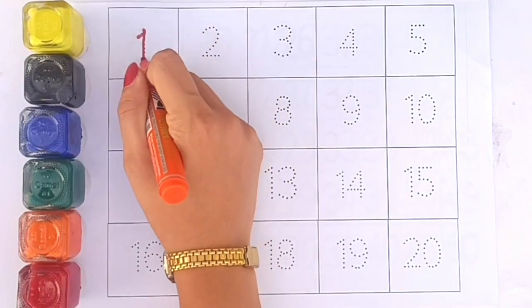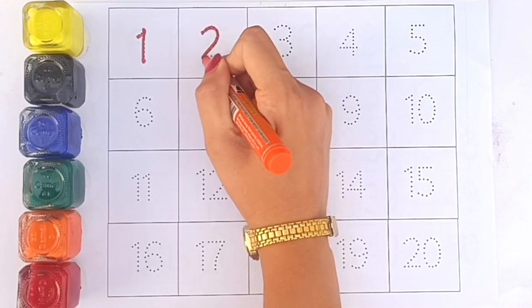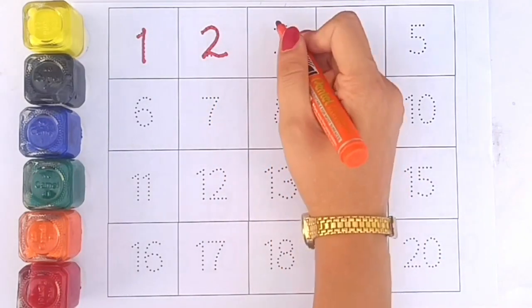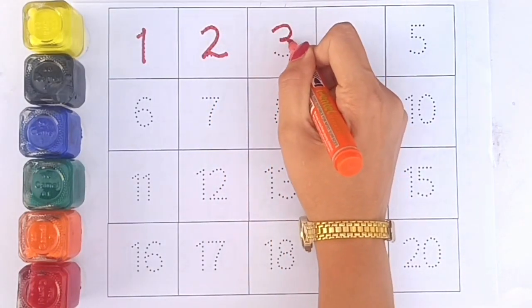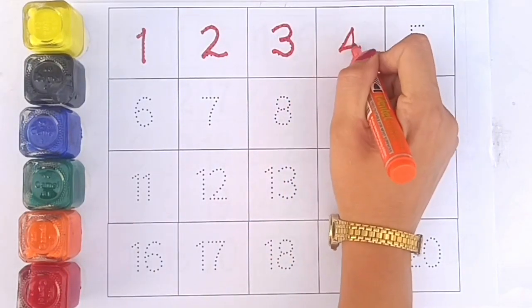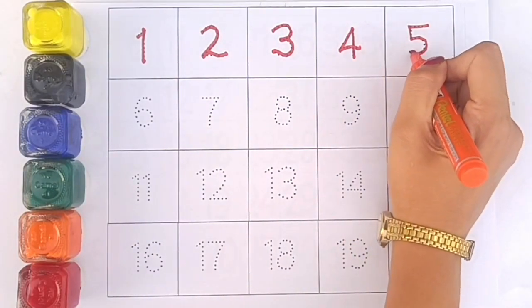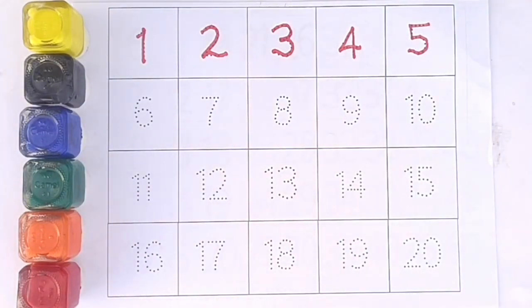Now, this is one. Two, this is two. Then three, this is three. Four, this is four. Five, this is five.